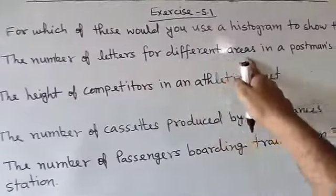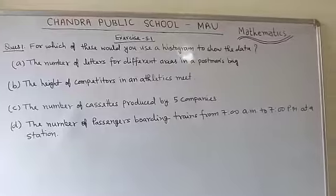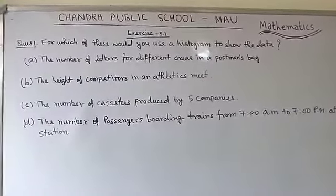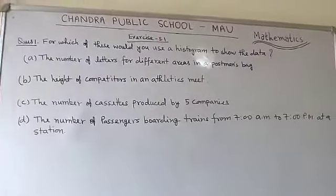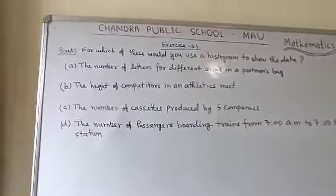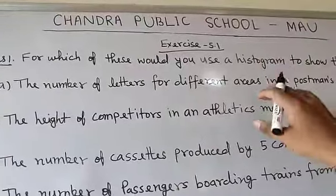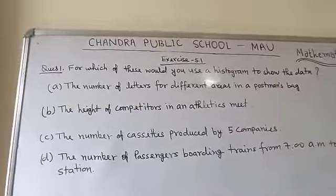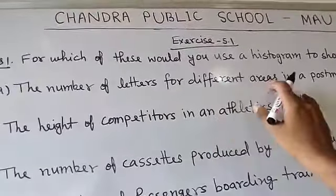The first option is the number of letters for different areas in a postman's bag. The data collected from this will not be suitable for group data, because there are different areas and the number of letters will differ for each area. So you are not able to prepare group data for that condition.